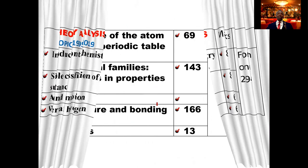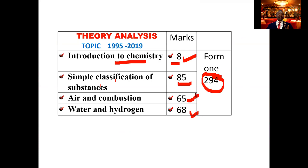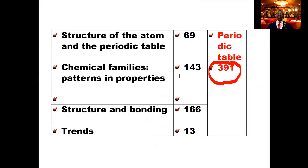Let us look at Form 2. The major topic in Form 2 is only the periodic table, which synchronizes four topics into one: structure of the atom, chemical families, structure and bonding, and trends across the period. You can see the marks: structure of the atom gives 969 marks, chemical families 143, structure and bonding 166, and trends 13. Total marks are 391. This is just one topic — the periodic table — and it has more marks than all of Form 1 combined. That tells you that you need to emphasize this particular topic heavily as you prepare for your exam.